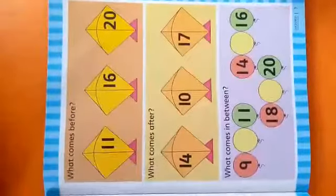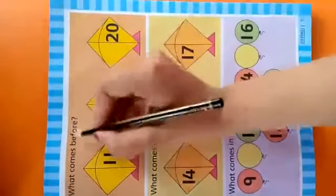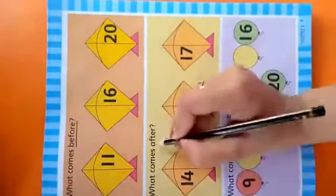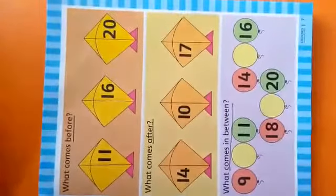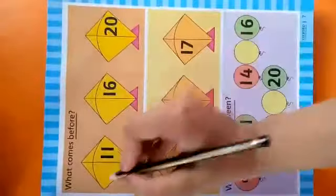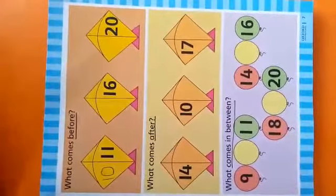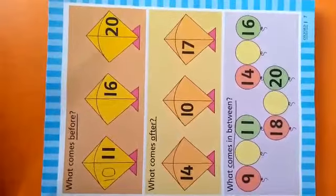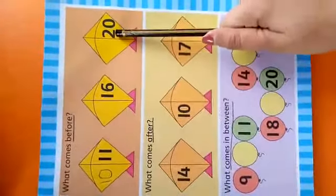Now look at page seven. Here you have the concept of before, after and what comes in between. So what comes before eleven? One, zero, ten. Now you have to write what comes before sixteen and twenty.